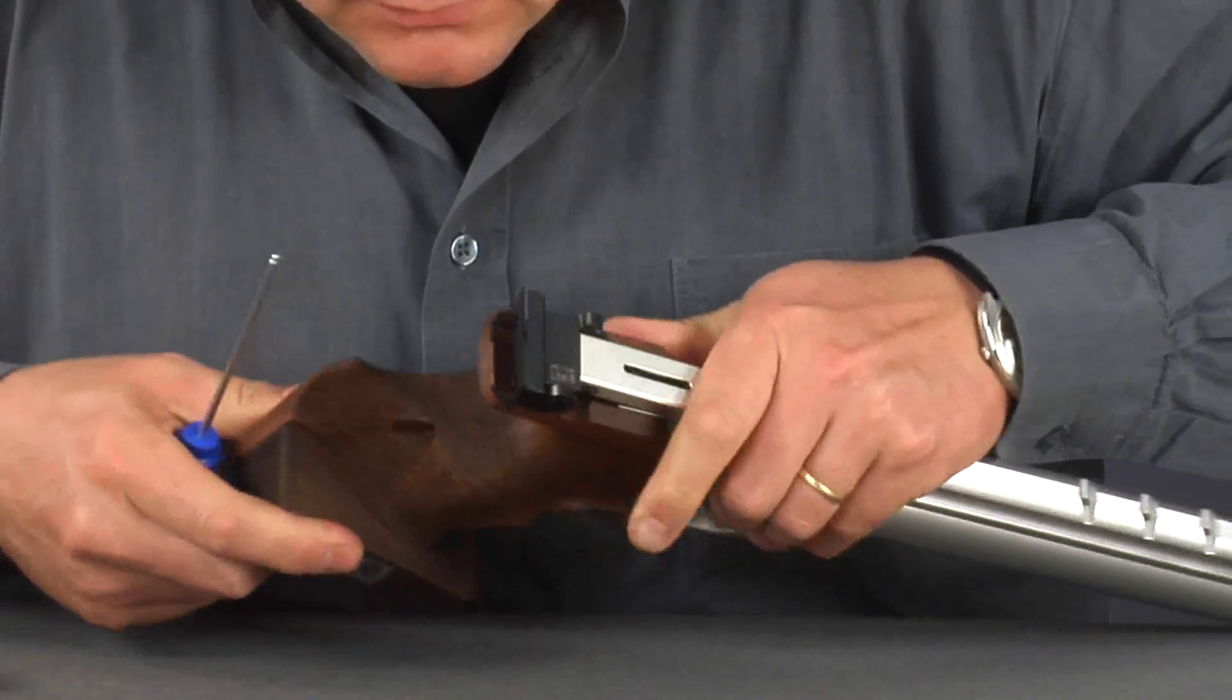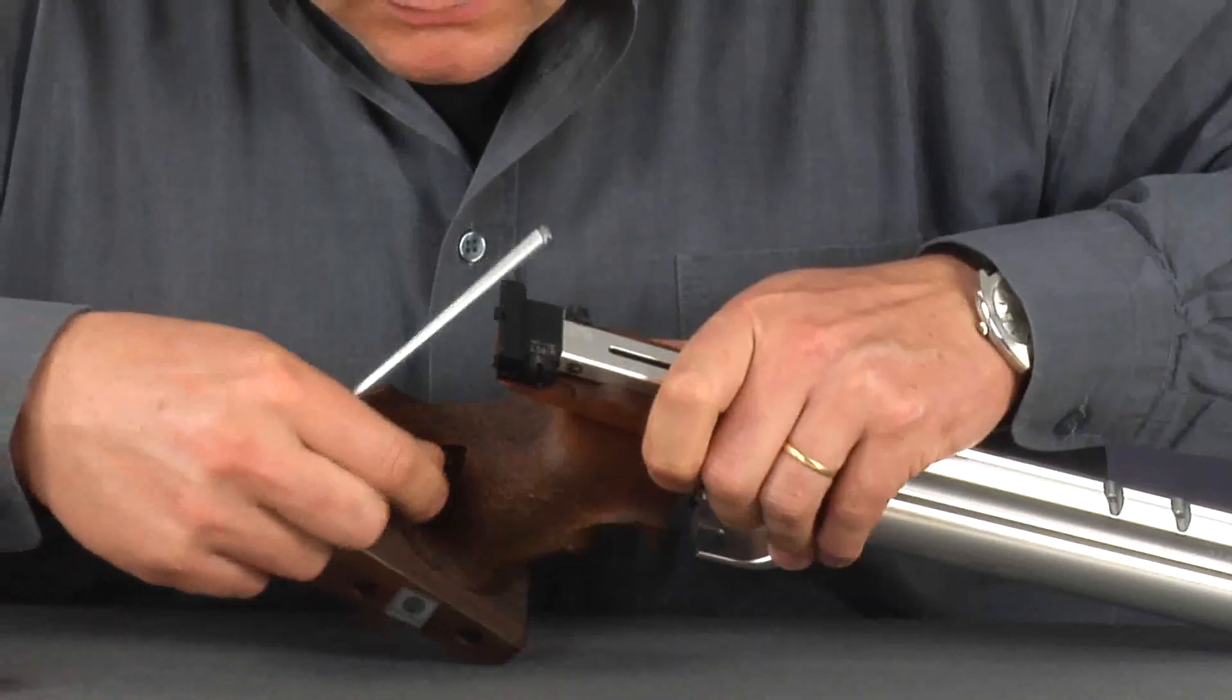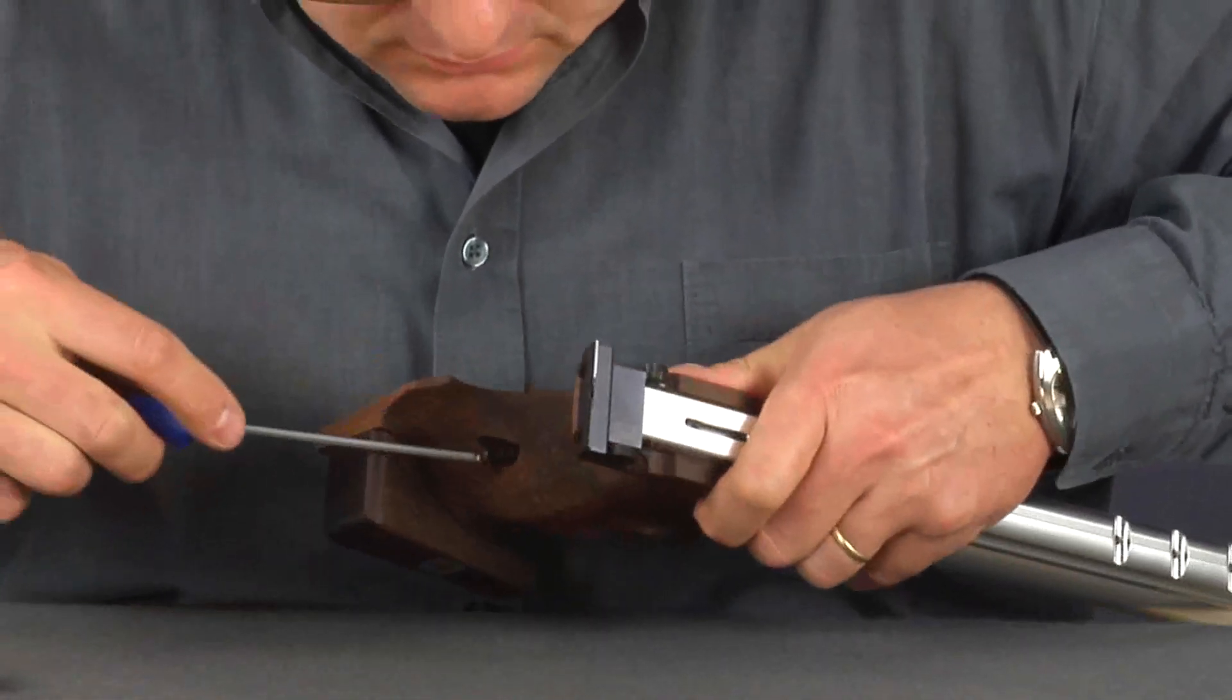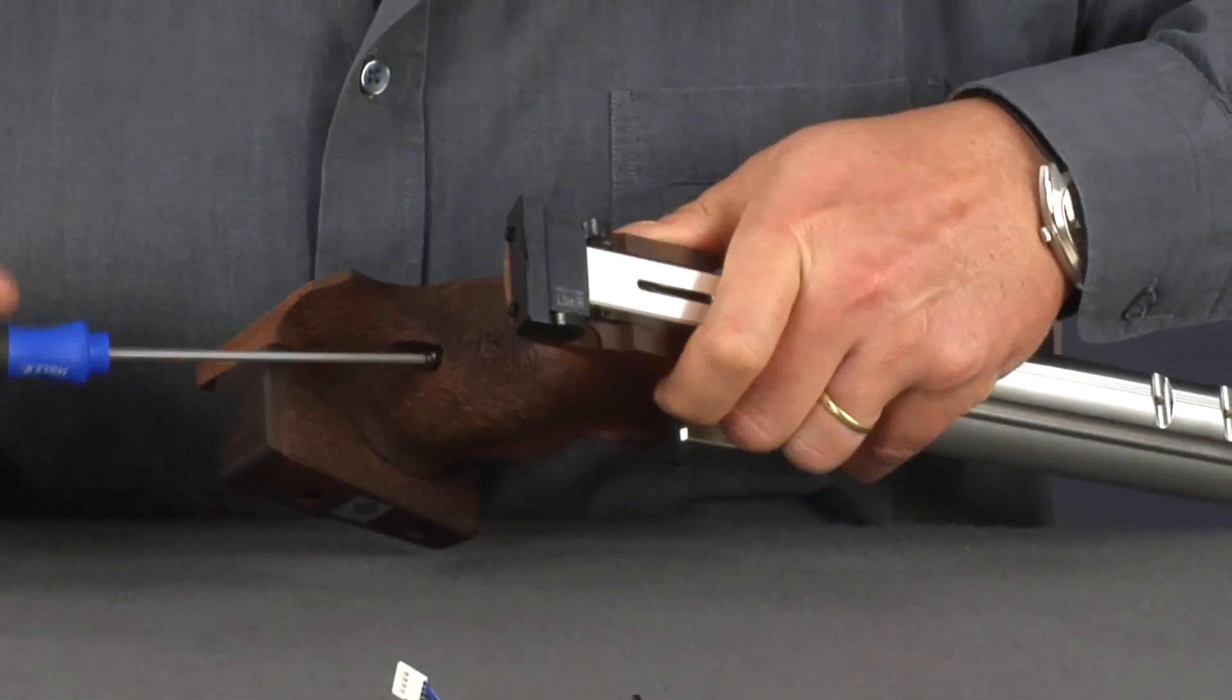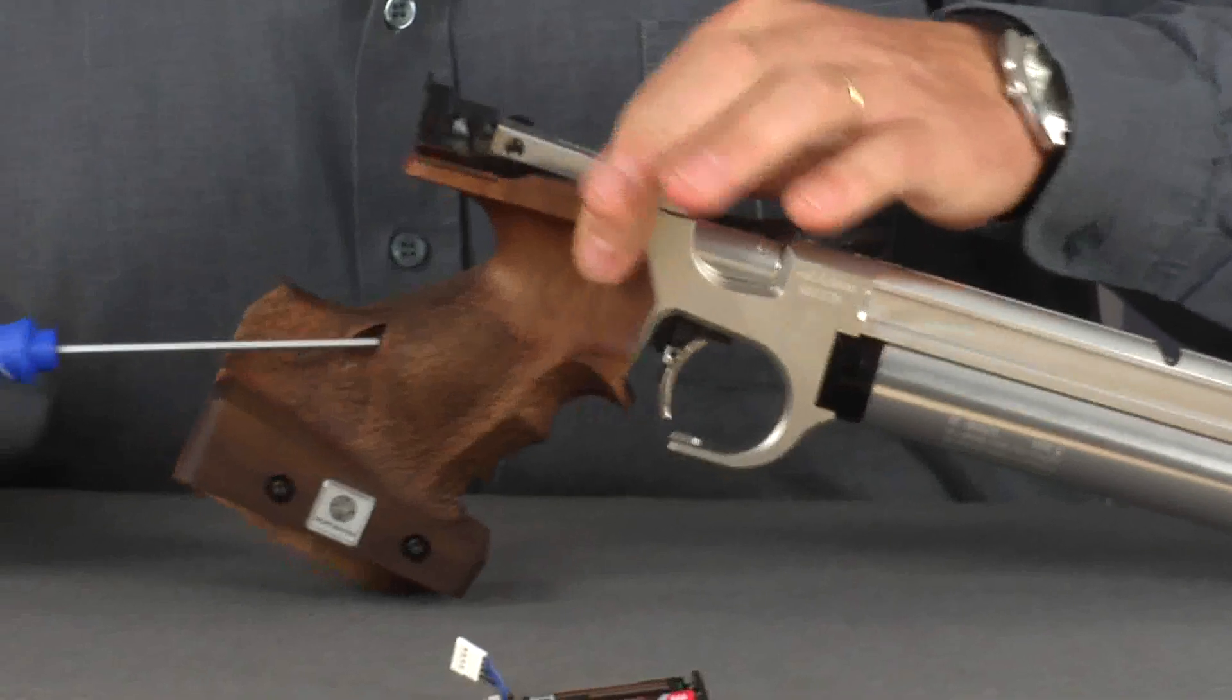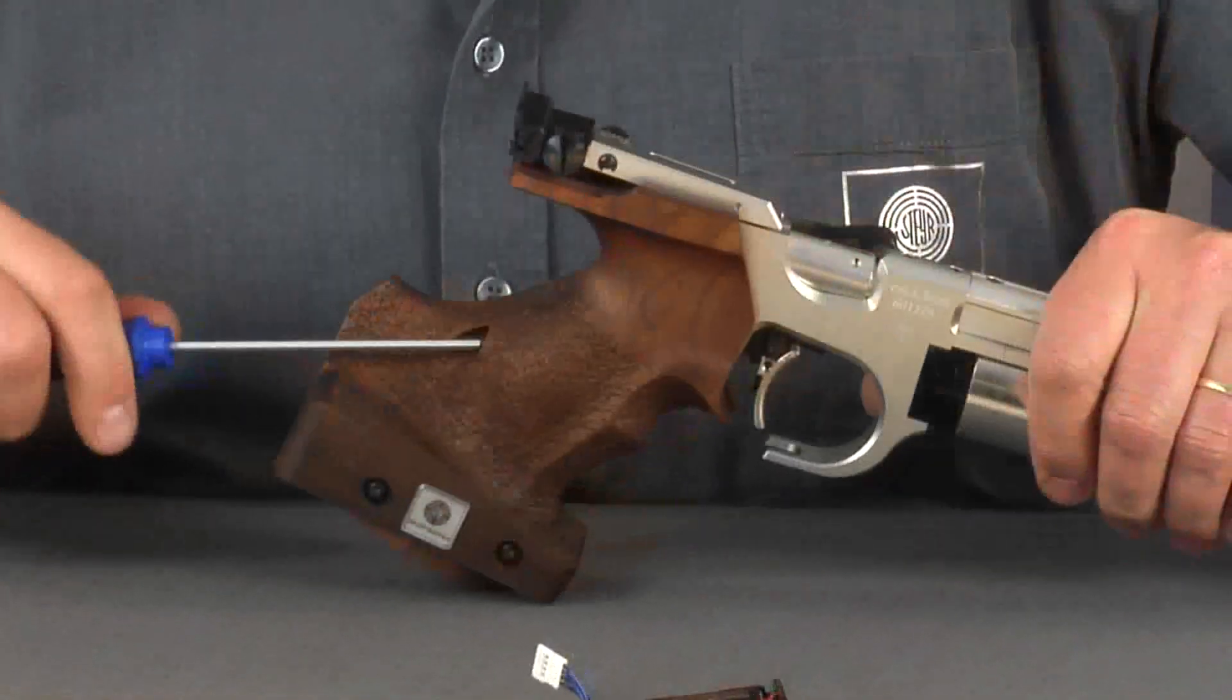Take time to ensure that the grip screw is in the correct position. It may take a few attempts to find this position, but be patient. Tighten the screw whilst wobbling the grip a little, as this will ensure the perfect seating of the grip upon the weapon.